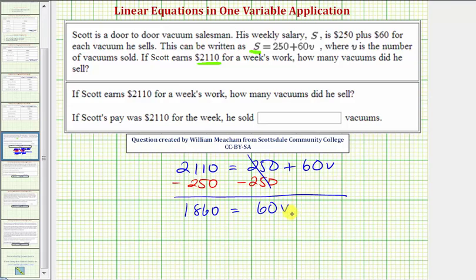60V means 60 times V, so to undo this multiplication and isolate V, we'll divide both sides by 60. Notice on the right side, 60 divided by 60 simplifies to 1, and 1 times V is just V.